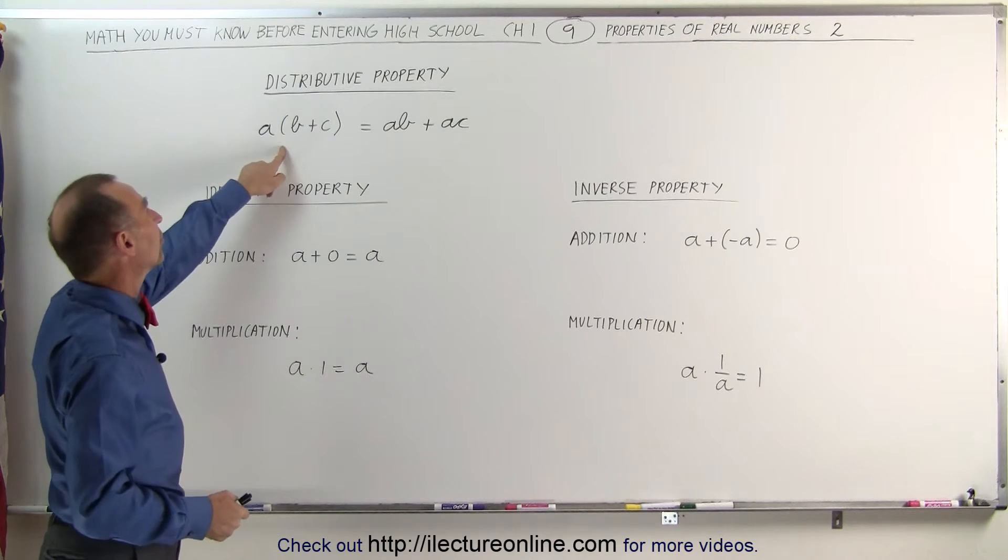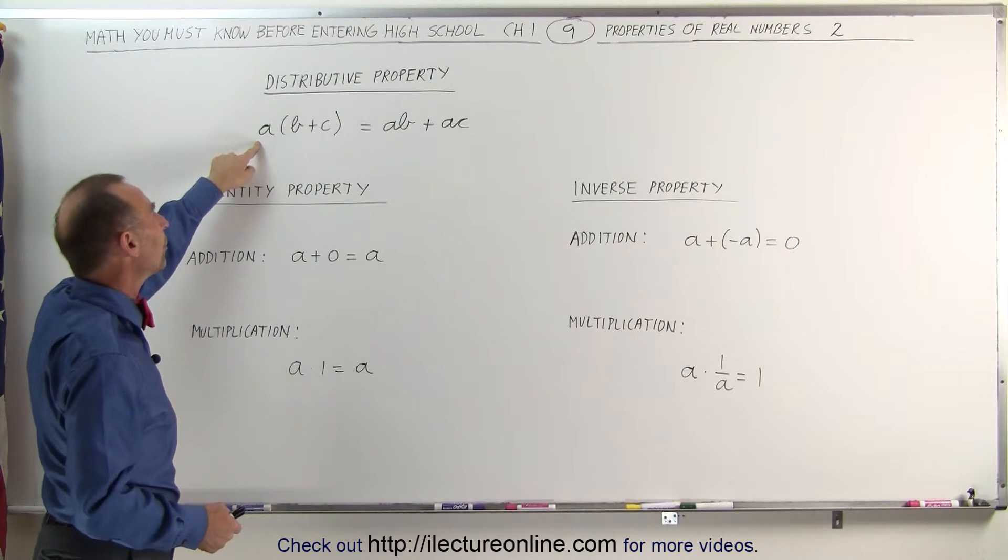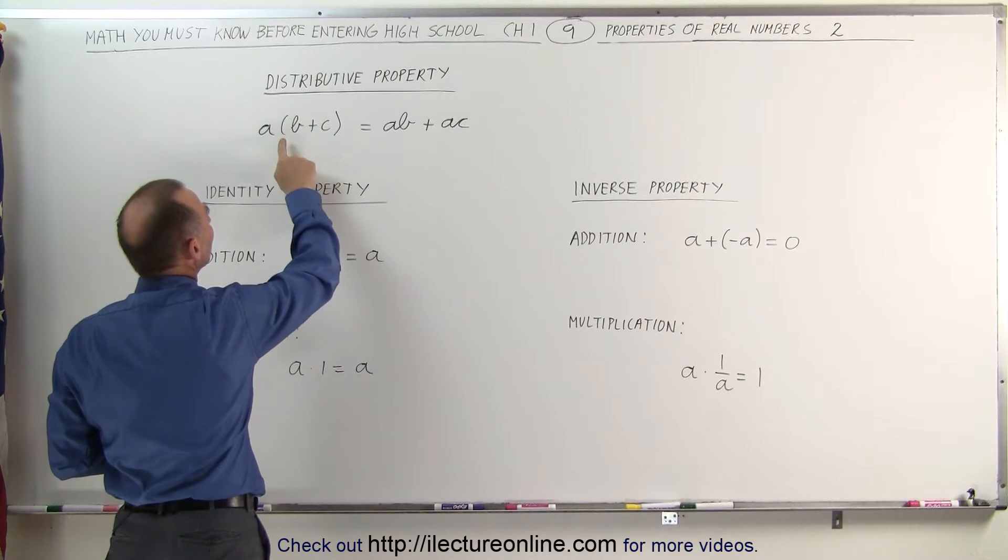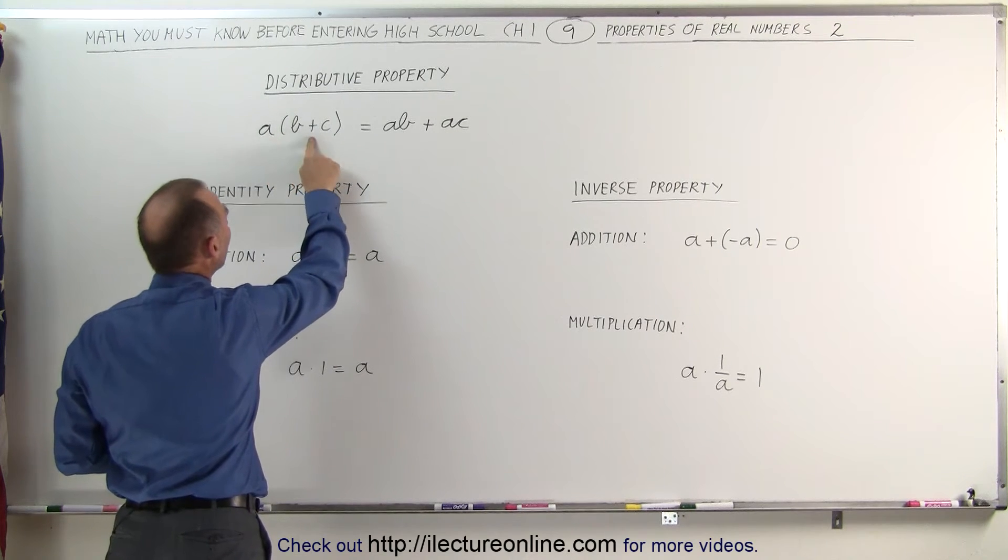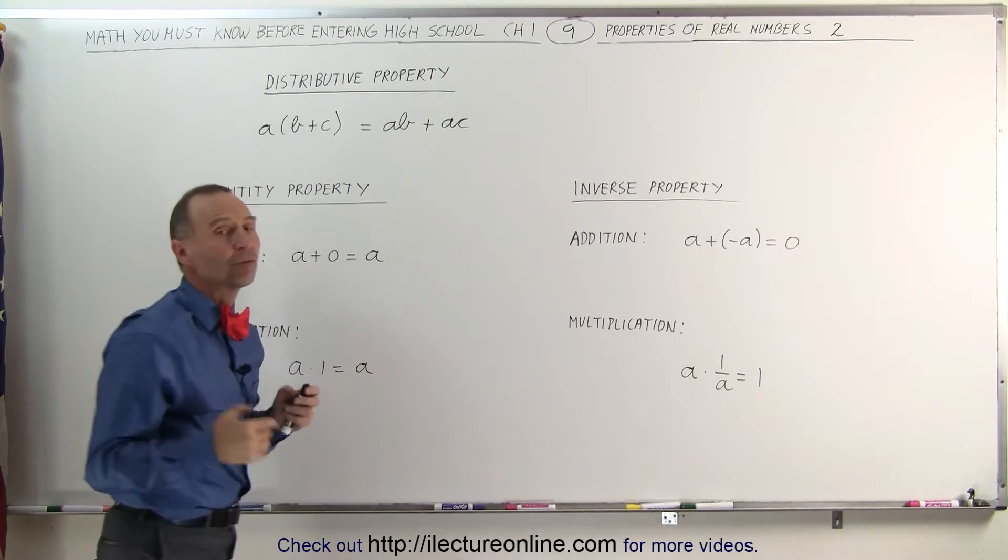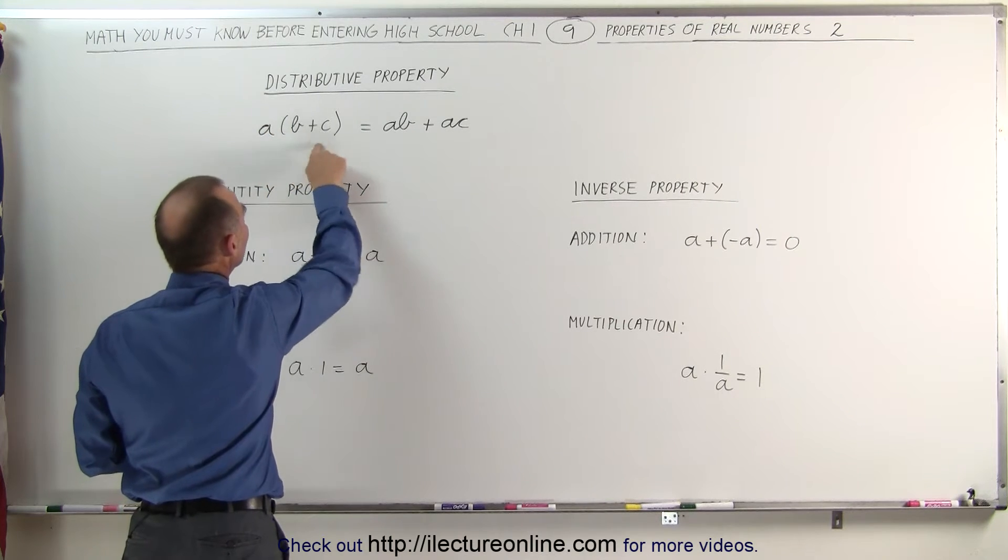Let's say in parentheses we have B plus C, and we multiply that times another number A. A can be distributed over both B and C, which means that this is equal to A times B plus A times C. This is considered to be the distributive property. A is distributed over both B and C.